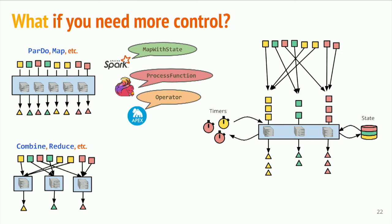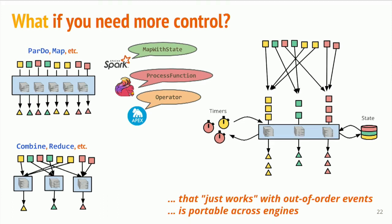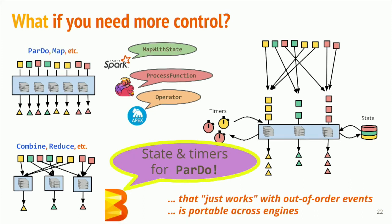So, this form of processing, it exists in a number of systems in different guises. But you want this, if you are an adherent to the Beam philosophy, you want it to just work when you've got out-of-order events. You want it to work with event time windowing without having to change all your logic. And, of course, you want it to be portable across these engines. You don't want to commit to any of them. So, in Beam, where we've added this is state and timers for ParDo. This is the subject of the talk. This is what we're here to talk about, is adding this mode of computation to Beam. And we'll talk about what you can do with it and a little bit of the details of sort of how it fits into the Beam model.